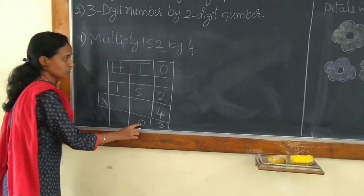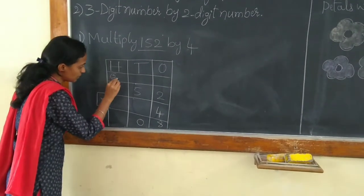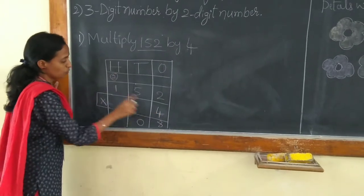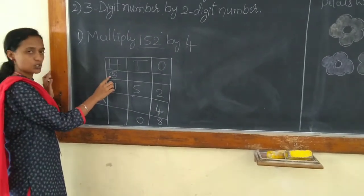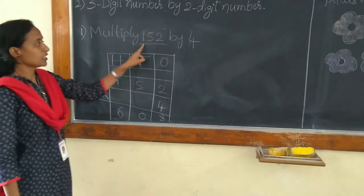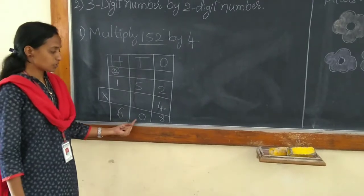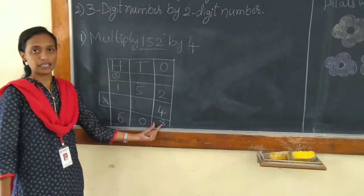0 has to be placed in the 10's place and 2 has to be placed at the 100's place. 4 times 1 is 4 plus 2 will be 6. So when you multiply 152 by 4, you will get the product 608.